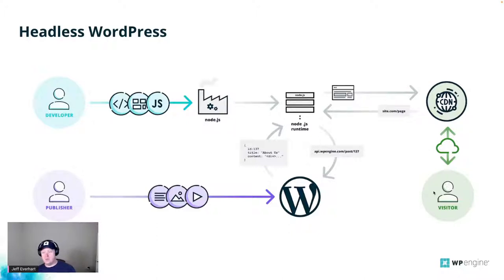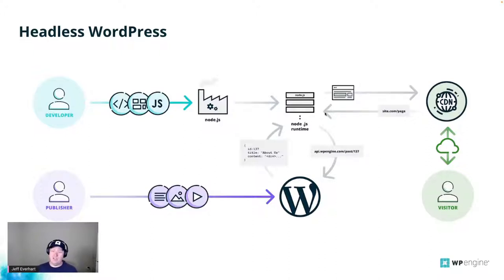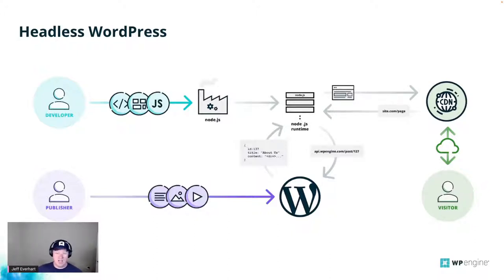Here we start with the same visitor journey. Maybe they're interacting with a CDN ahead of it, but when they make a request for site.com/page, that doesn't necessarily go directly to WordPress. I'm calling this a 'client' because it's a really flexible space - this could be a Node.js runtime, a full stack JavaScript framework like Next, Nuxt, or Sveltekit, or as simple as an HTML page, or an iOS or Android application.